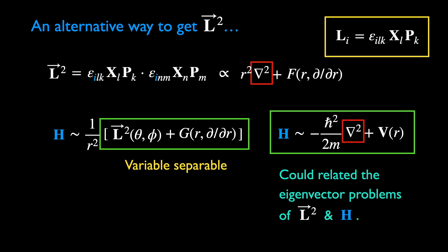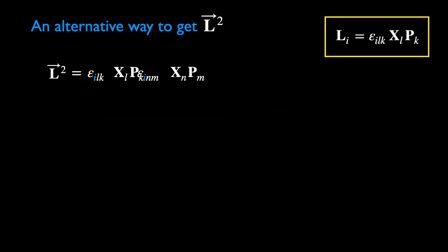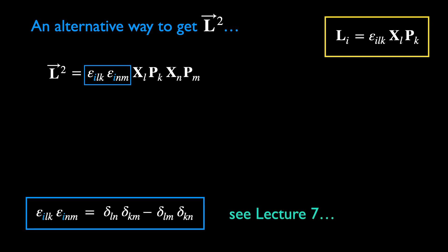But we are getting ahead of ourselves. Let's first verify the form on the right hand side. Once again, there's an excuse for using our new friend, the Levi-Civita product identity.